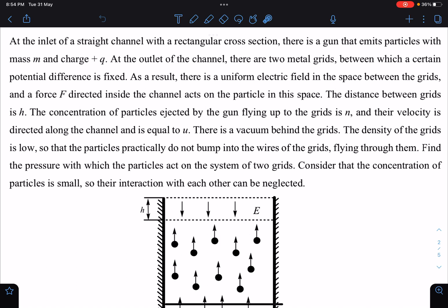There is a uniform electric field in the space between the grids, and a force F directed inside the channel acts on the particles in this space. The distance between grids is h. The concentration of particles, meaning number of charged particles per unit volume is n, and their velocity directed along the channel is equal to u.